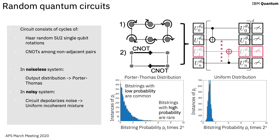In the presence of noise, the circuit serves to depolarize the noise, which gives us a uniform incoherent mixture. So all outcomes will tend towards having the same probability, clustered around 1 over 2^n. The key intuition is that coherent noise still drives the output distribution towards a Porter-Thomas distribution, just not the correct Porter-Thomas distribution. So our binning strategy will be to see if the output distribution from our hardware is any generic Porter-Thomas distribution versus the correct Porter-Thomas distribution that we pre-compute from our classical hardware.